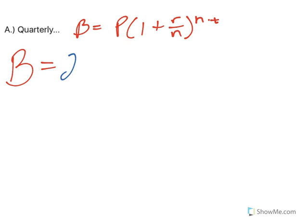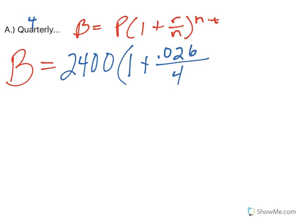In our case, balance equals—the principle is 2,400, that's how much we're starting with. Inside my parentheses, 1 plus the rate, which is 2.6%, so that's .026. How many times am I compounding? Quarterly means 4, so I divide by 4. Then in the exponent, I have 4 times a year for 8 years.